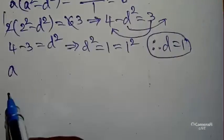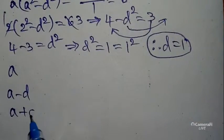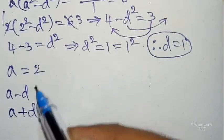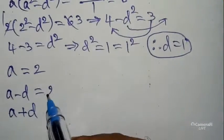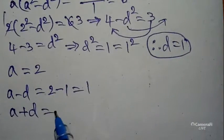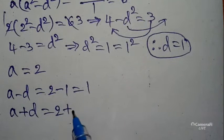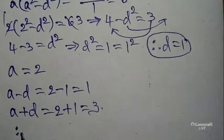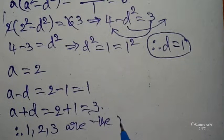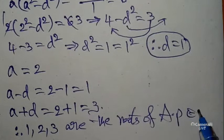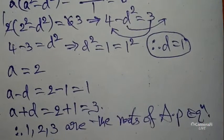After getting d equals 1, we can find the roots: a minus d, a, a plus d. With a equals 2 and d equals 1: a minus d equals 2 minus 1 equals 1; a equals 2; a plus d equals 2 plus 1 equals 3. Therefore 1, 2, 3 are the roots of the AP equation.